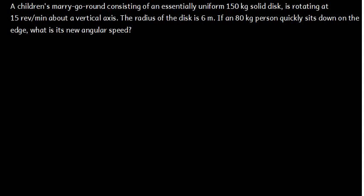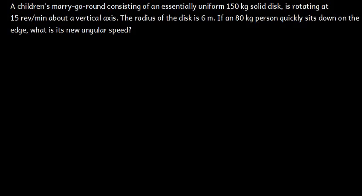Whenever we are talking about angular momentum, angular momentum is represented by the letter L. Angular momentum is given by inertia times angular speed or angular velocity. Whenever we are talking about momentum, we have momentum before and momentum after.